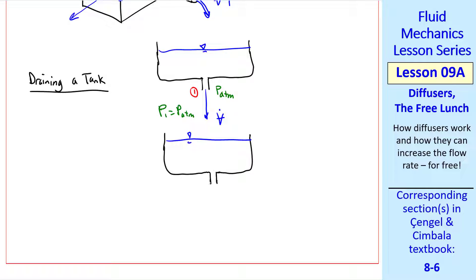Now imagine the same tank, but we add a diffuser to the outlet. Again, we have a jet exiting into the atmosphere. This is location 1, and this is location 2, and we'll have some volume flow rate. But this is still a jet exiting into the atmosphere. So P2 equal P atmosphere. But what about P1 then?